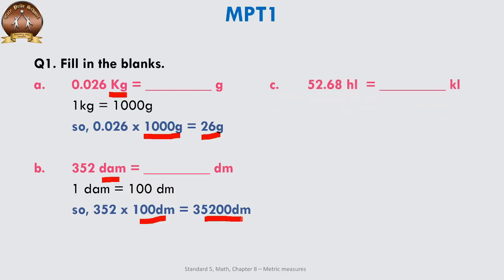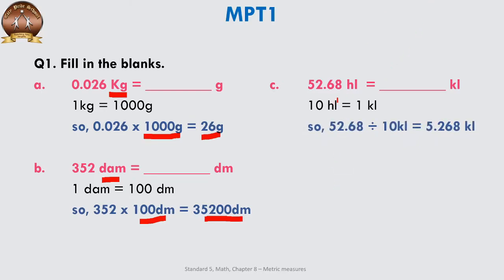Now 52.68 hectolitres has to be converted into kilolitres. Hectolitre is a smaller unit and kilolitre is a bigger unit — smaller to bigger, we divide. Remove the HL, divide by 10, and convert into kilolitres. When dividing by tens, the decimal point shifts towards the left, so the answer is 5.268 kilolitres.